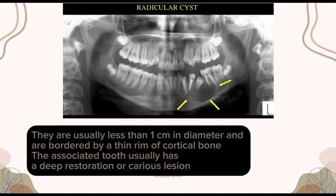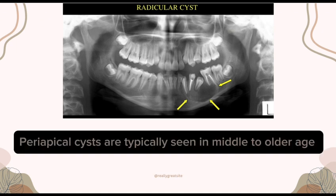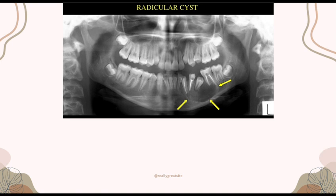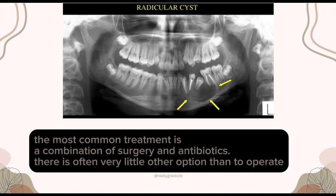Periapical cysts are typically seen in middle to older age groups. The most common treatment is a combination of surgery and antibiotics.